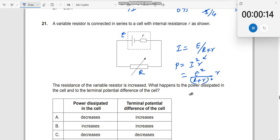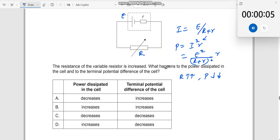Okay. So therefore I get this. Now as you notice here when the R value increases, it is in denominator. So P value will decrease. Right. So therefore power dissipated in the cell will decrease.